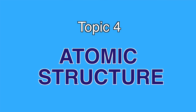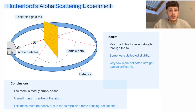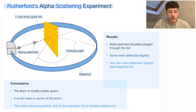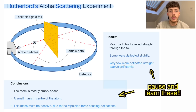And finally on to topic four, the final topic of GCSE Physics Paper 1. This is atomic structure, and to start us off we have Rutherford's alpha scattering experiment. This is a very common six-mark question that appears a lot in past papers. The experiment involved firing alpha particles at a very thin sheet of gold leaf foil, and Rutherford made a number of observations.